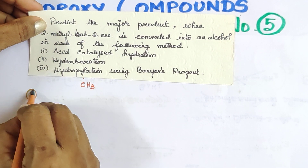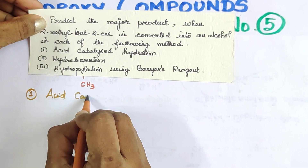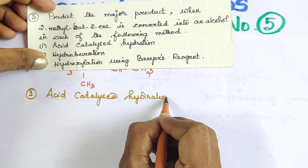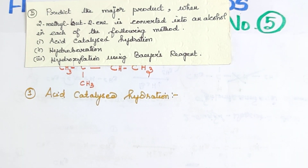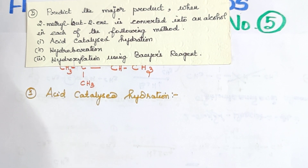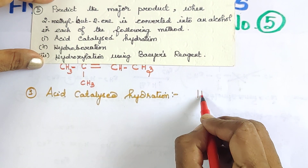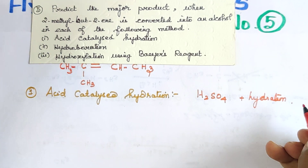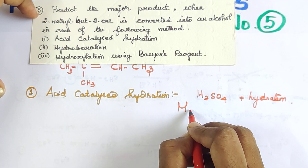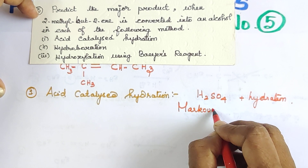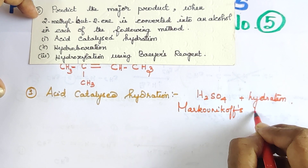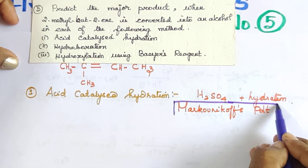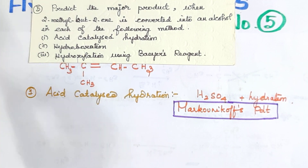The first reaction is acid catalyzed hydration. In this method, we treat the alkene with H₂SO₄ and water. The most important point is that this reaction follows Markovnikov's rule and gives the Markovnikov product as the major product.